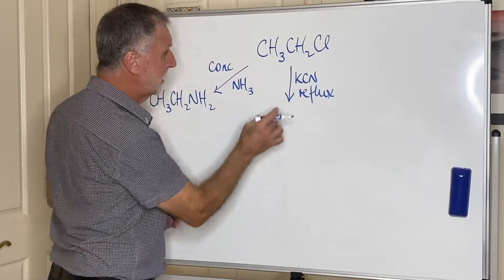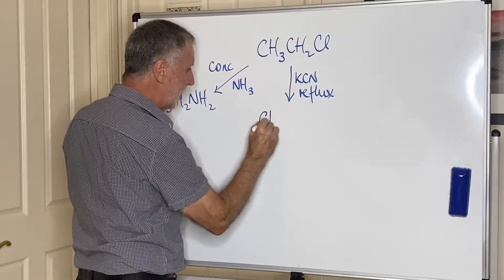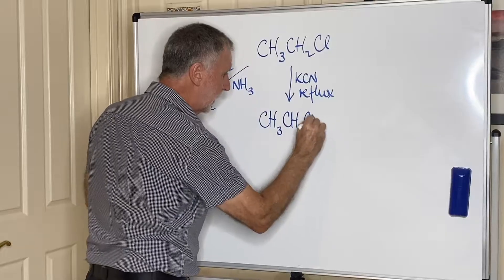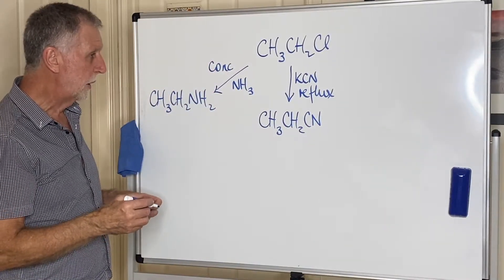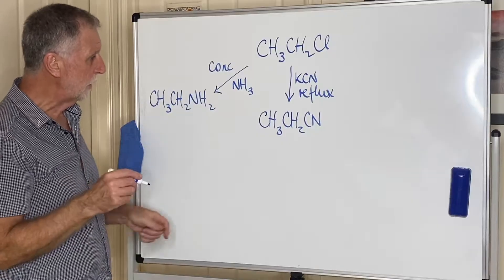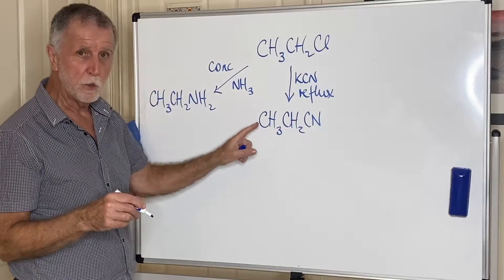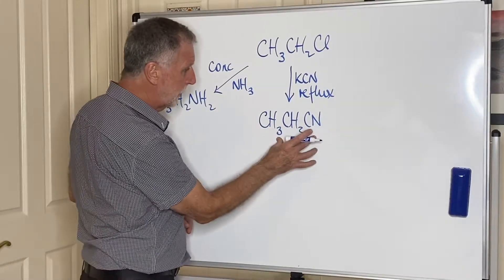Now, potassium cyanide contains the CN-, and that will replace the chlorine there to give you CH3, CH2, CN. This one, hopefully you remember the naming of the nitriles. This has got three carbons. Don't forget to include every carbon, even if it's part of the functional group.